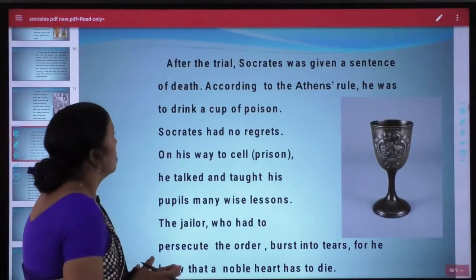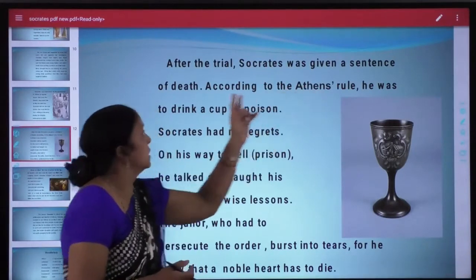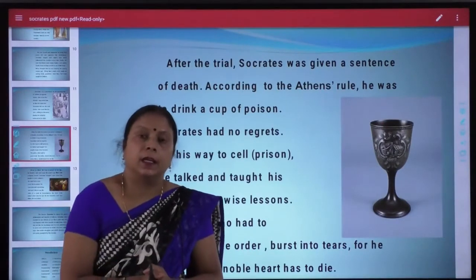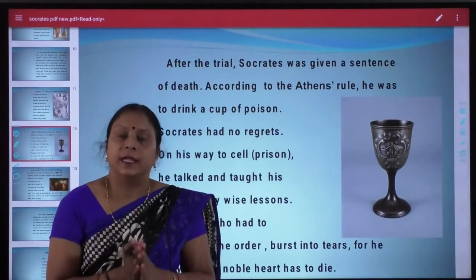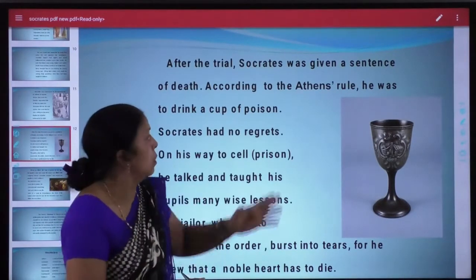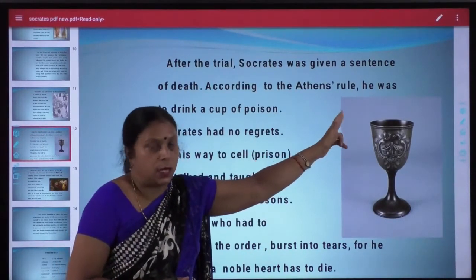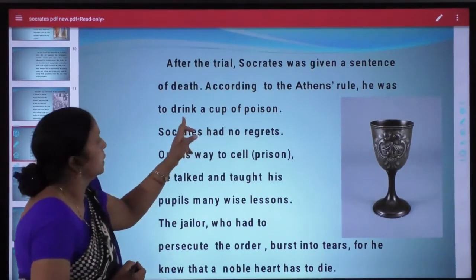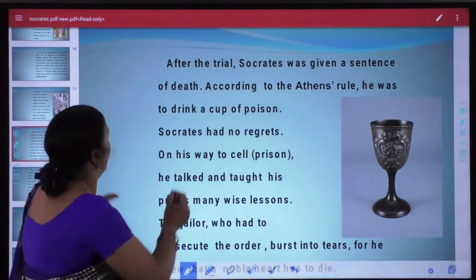Now let's see what happens. After the trial, Socrates was given a sentence of death. Jaisa anuman lagaya gaya tha, Socrates ke trial ke baad unko death sentence mila — mrityu ki saza mili. And according to the Athenians rule, Socrates ko ek cup of poison peena tha — he was to drink a cup of poison.